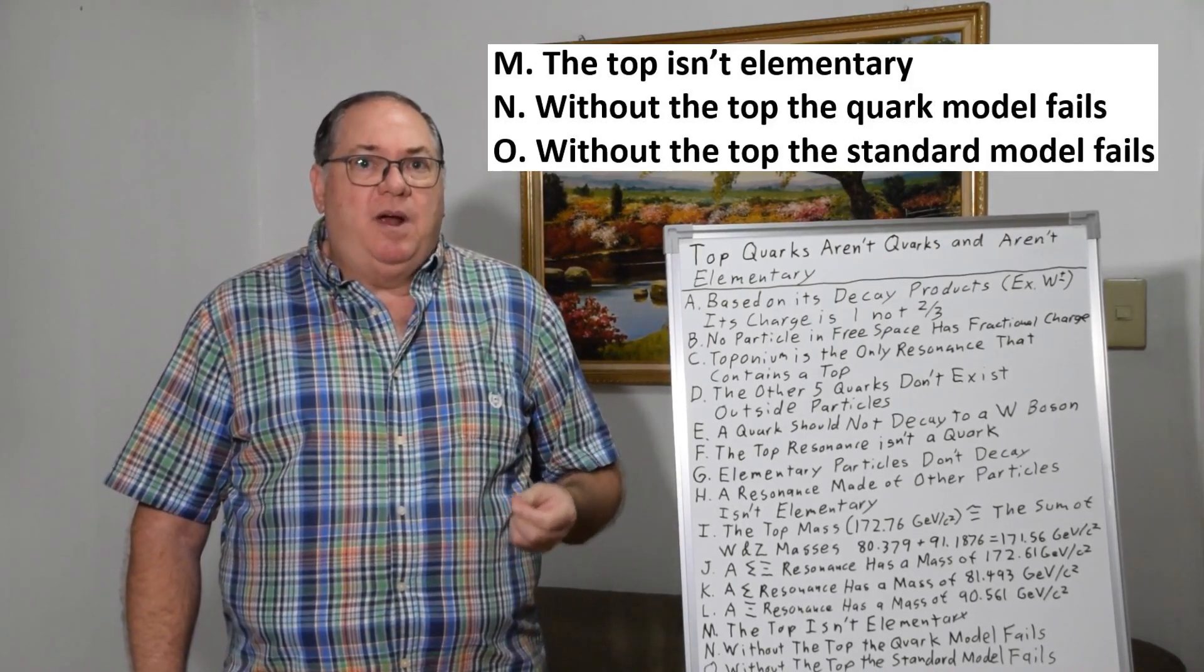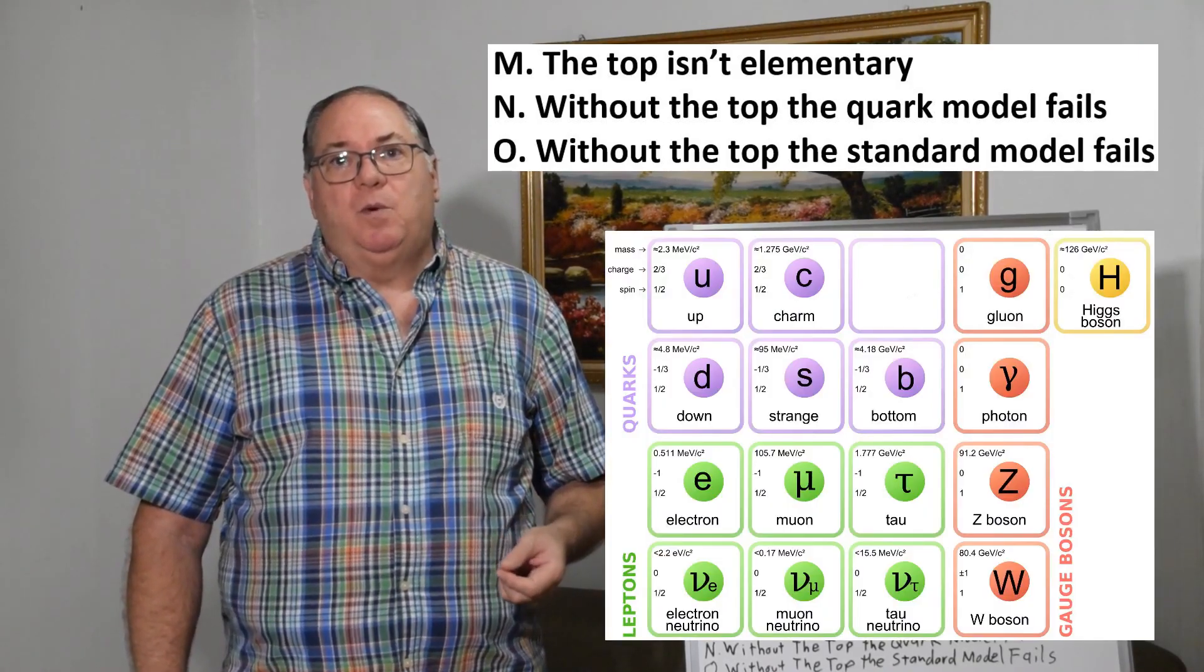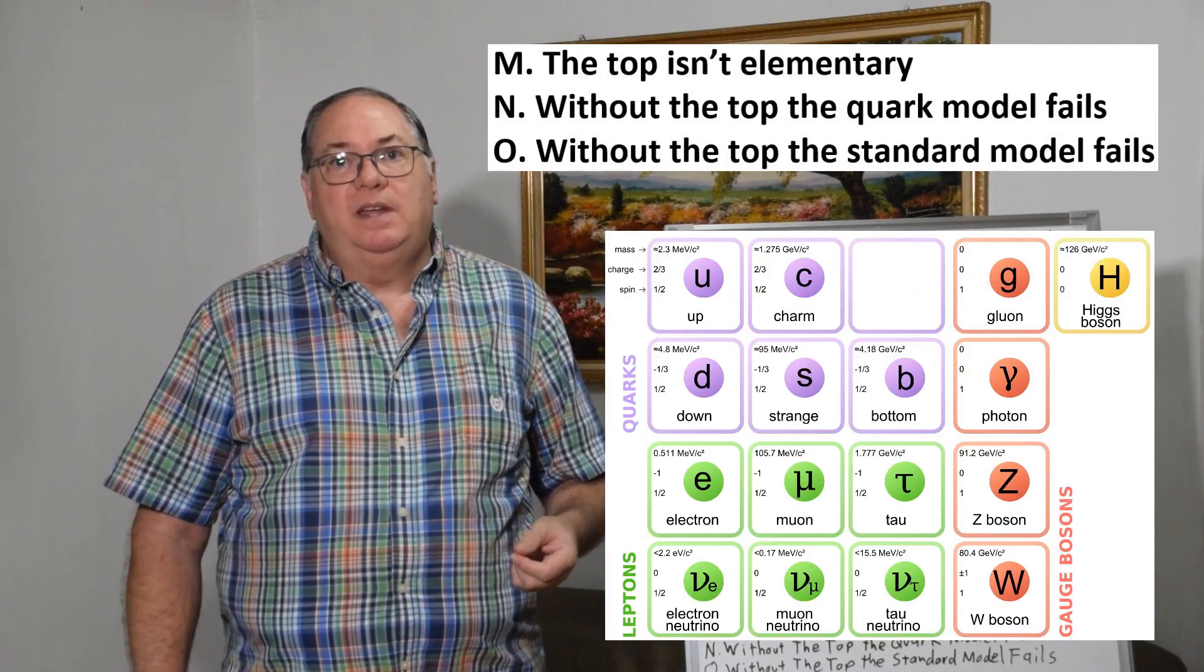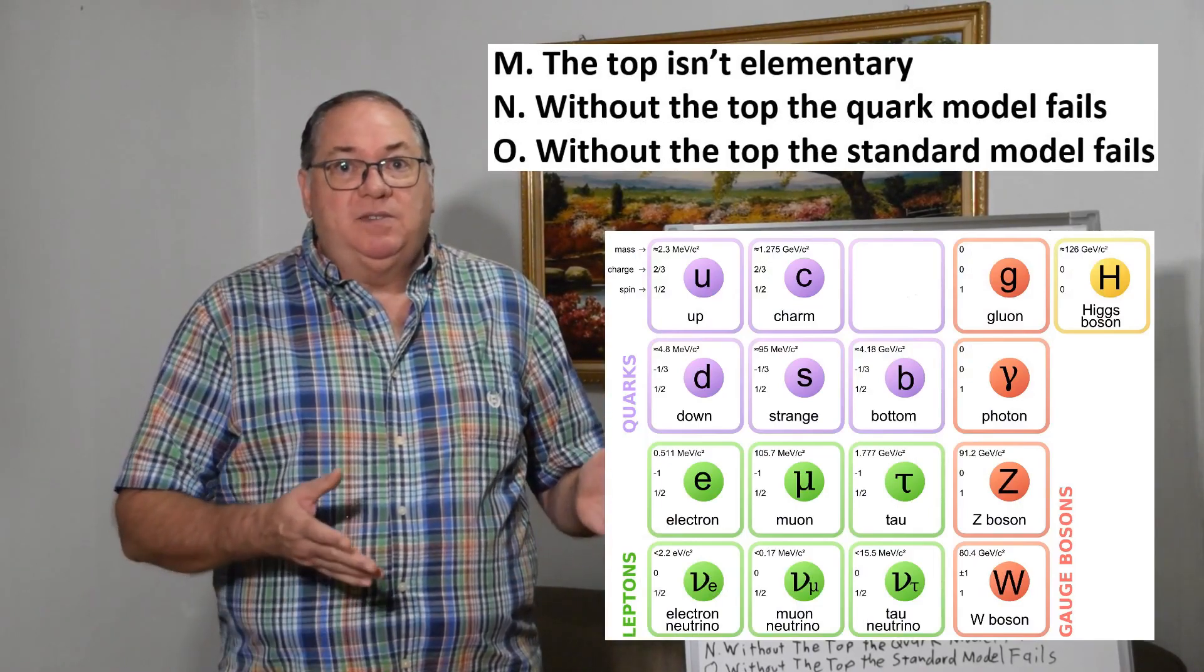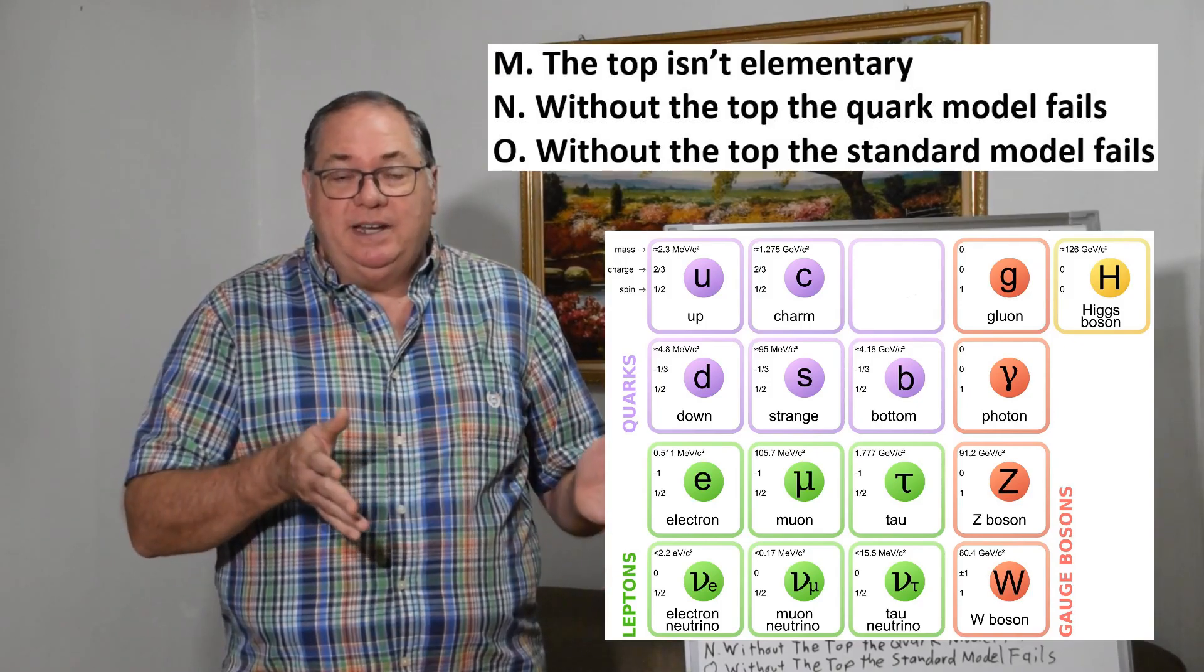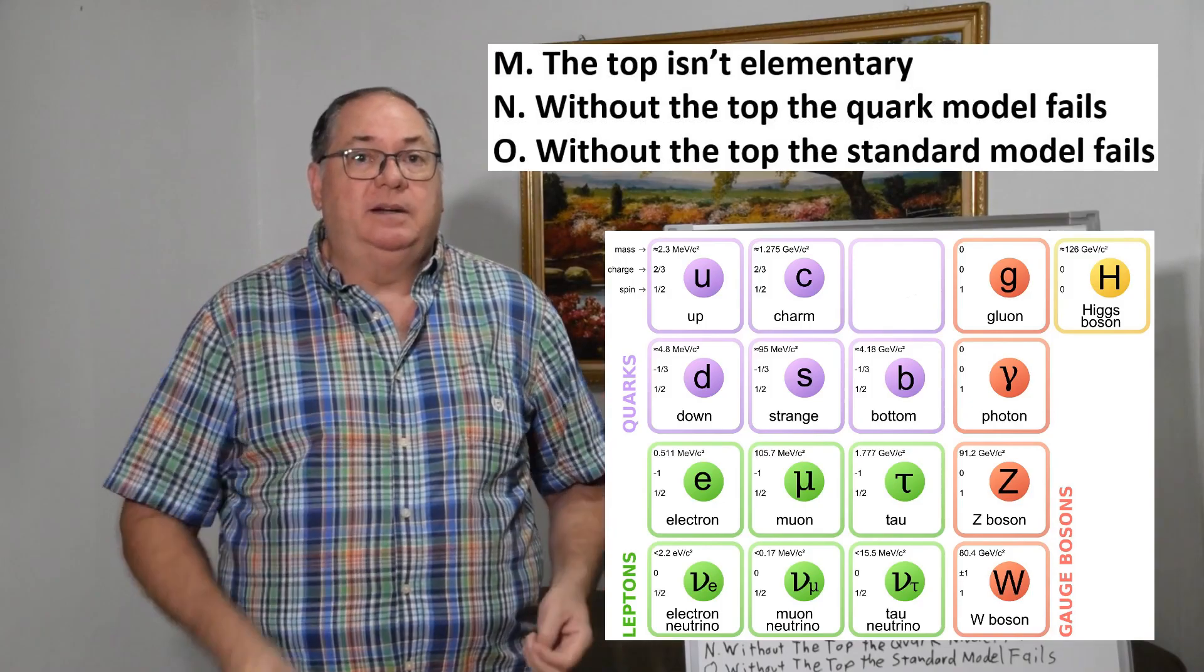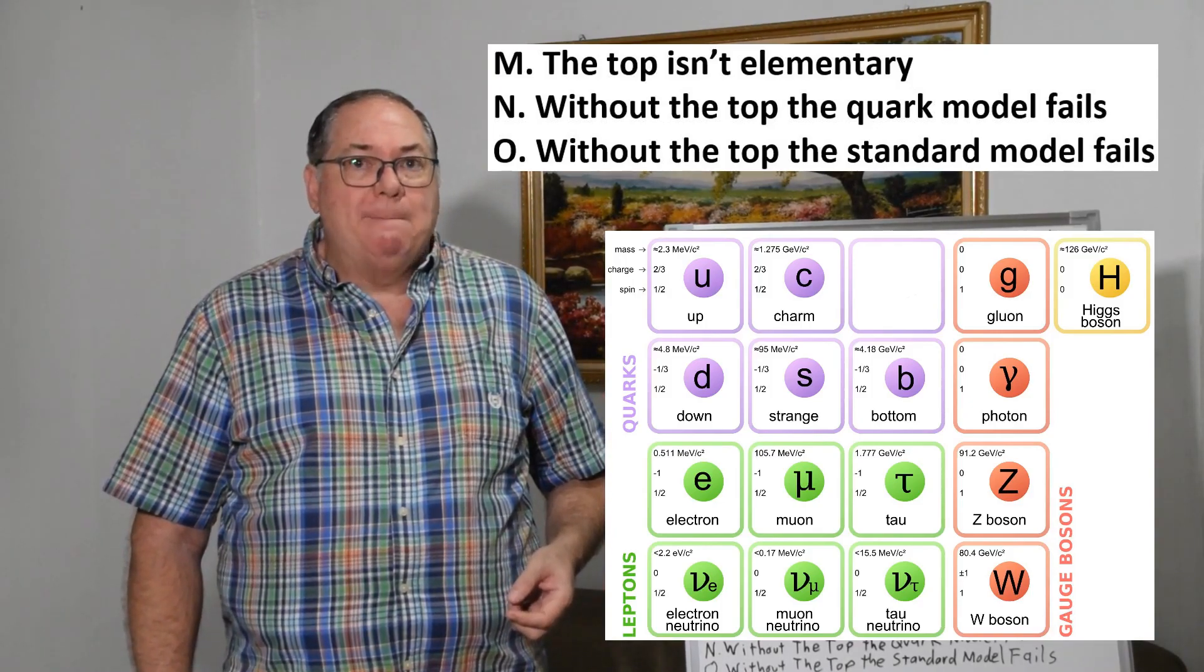And that leads to a problem because if you remove the top quark from the quark model, the quark model fails. You have a hole there. They wanted six for a reason, because they had three tiers of leptons, they need three tiers of quarks, and they needed pairs to make it all work.